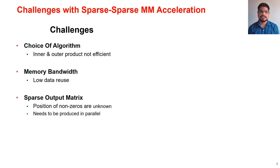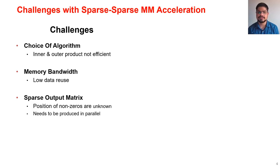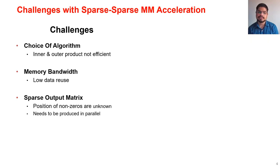The key challenges in accelerating sparse sparse MM: the first is the choice of algorithm, as the commonly used inner and outer product approaches tend to be inefficient, requiring rethinking of the algorithm. The second is memory bandwidth utilization — due to the low data reuse of sparse matrices, we need to achieve high memory bandwidth utilization. Last but not least is the sparse output matrix format itself: since different PEs need to produce the sparse output matrix in parallel and the number and position of non-zeros are not known ahead of time, we need a mechanism so that different PEs can work together without stalling each other.